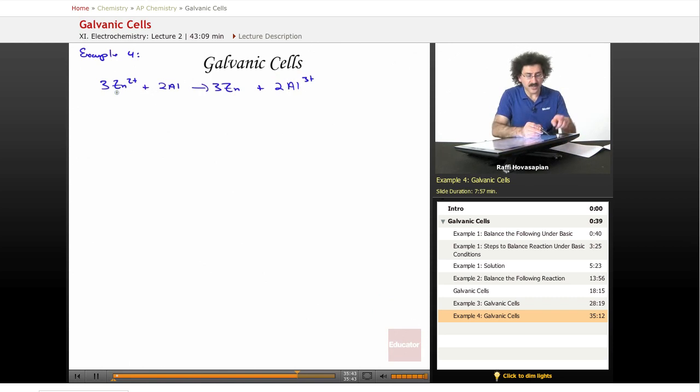Notice what's happening here. Zinc ion is turning into zinc metal. Aluminum metal is turning into aluminum ion.